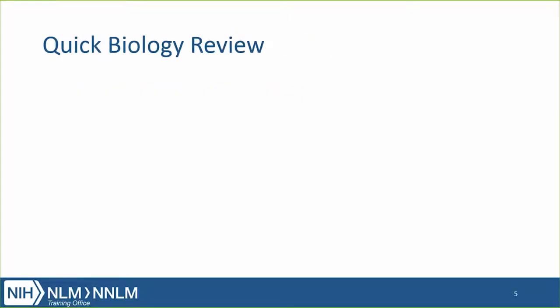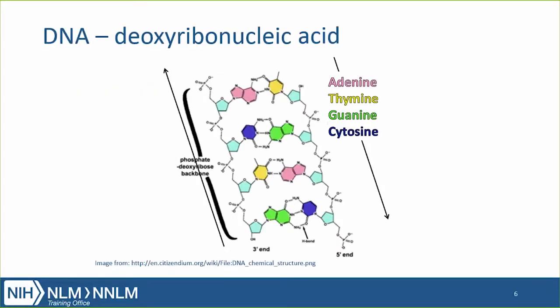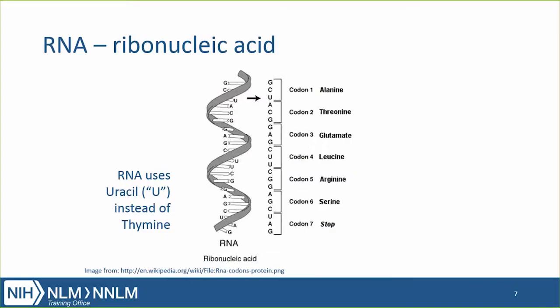I'm going to give a quick biology review. DNA, or deoxyribonucleic acid, contains the information that is inherited and copied when cells multiply. It contains four nucleotide bases: A, T, C, and G, for which the full names are shown on the slide. A second biologically important molecule is RNA, or ribonucleic acid. One difference between DNA and RNA is that uracil replaces thymine, which is present in DNA.